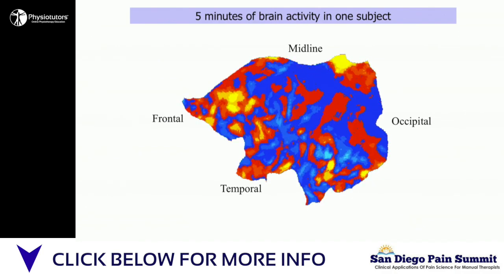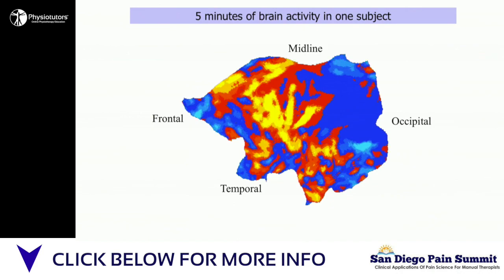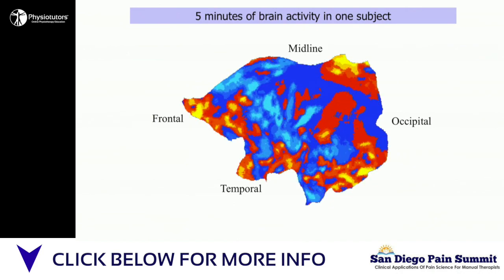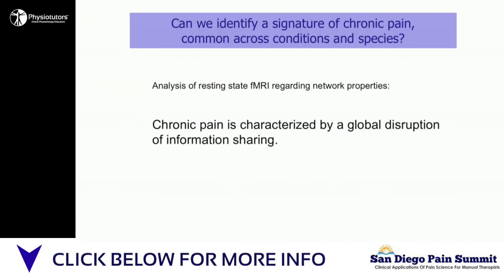We look at how that dynamic information exchange is changed in a chronic pain condition. From that data we can derive a global information disruption index — essentially a single number that we think is specific to the presence of chronic pain and its intensity.